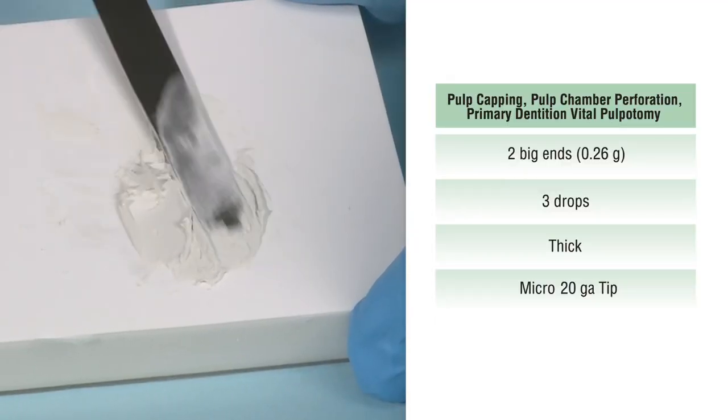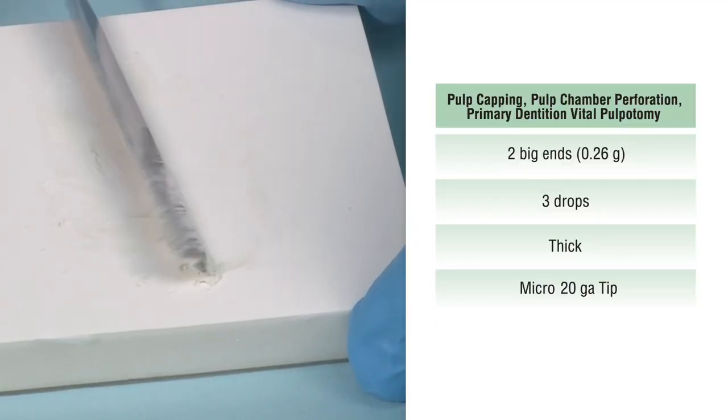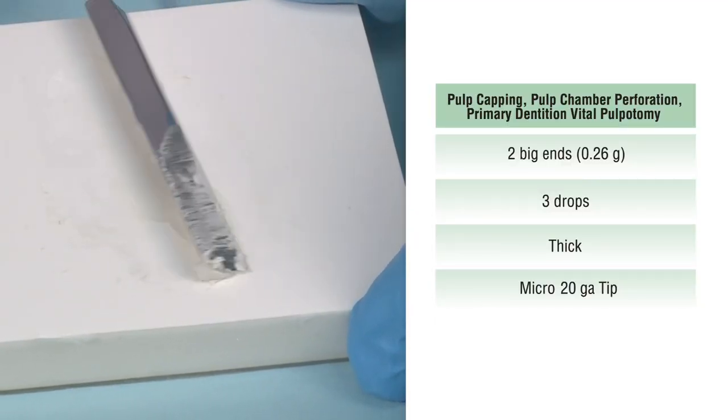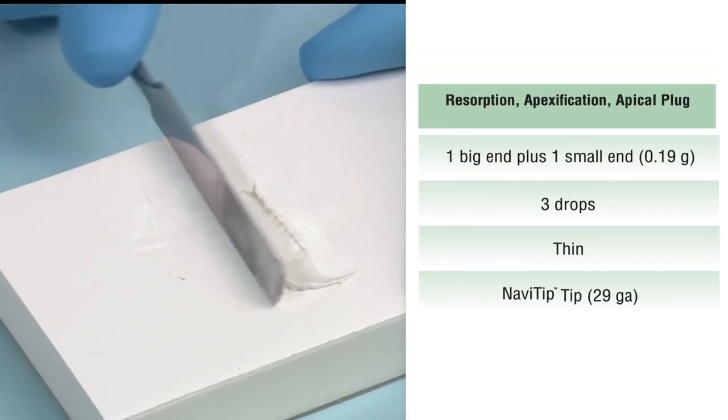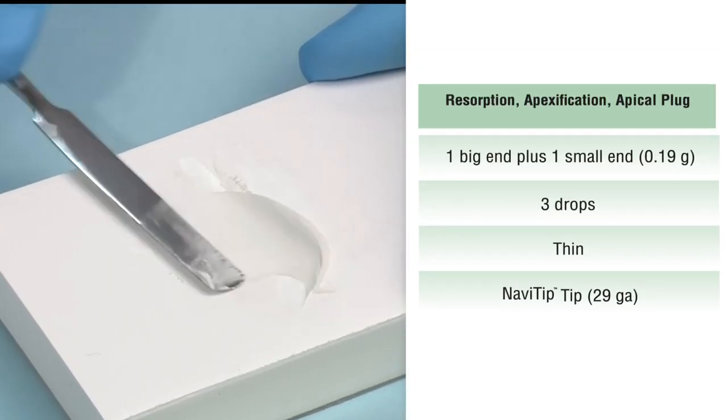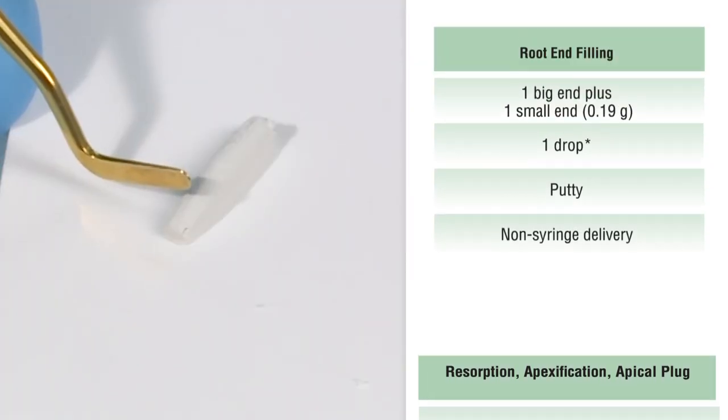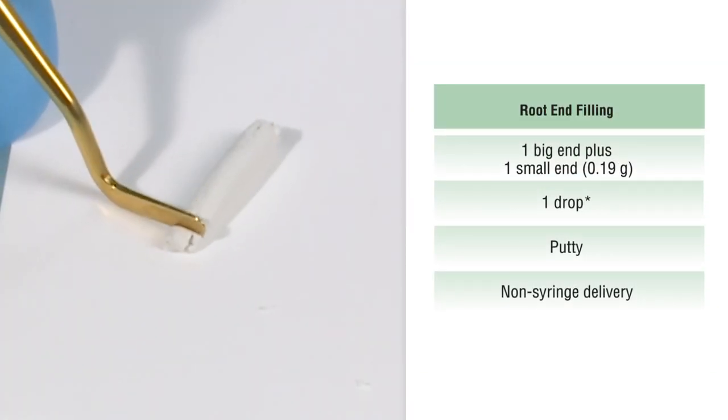For example, use a thick consistency for pulp capping, pulp chamber perforation, and pulpotomy. Use a thin consistency for resorption, apexification, and apical plug. A putty consistency can be used for root end filling.